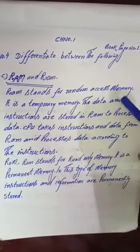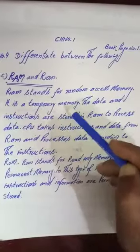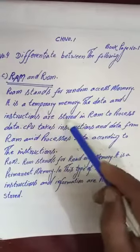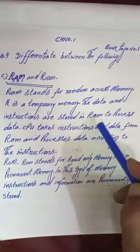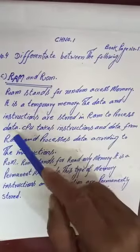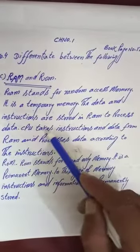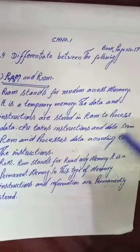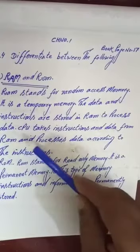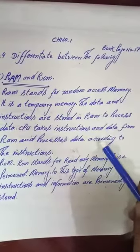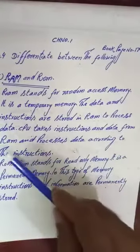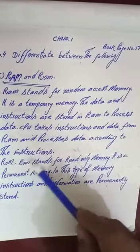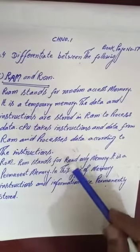RAM is a temporary memory. The data and instructions are stored in RAM to process our data. CPU takes instructions and data from RAM and processes our data according to the instructions. ROM stands for read only memory.